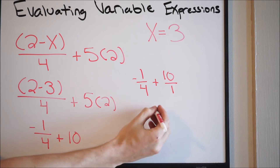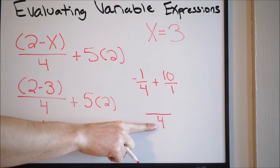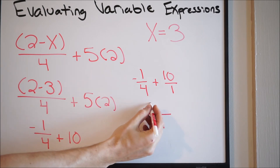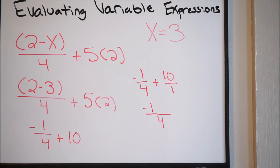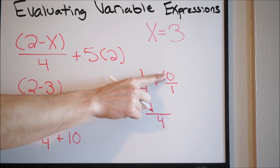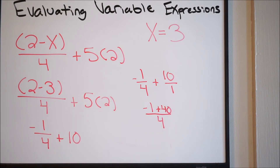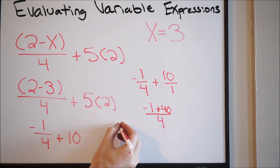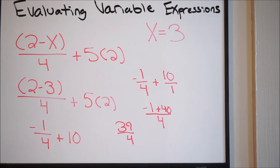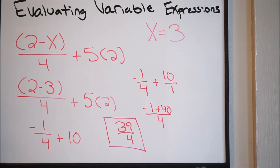So 4 times 1 is going to give you 4. Then you ask yourself, what did you multiply the first denominator by in order to get 4? You multiply by 1, so 1 times negative 1 is negative 1. And what did I multiply the second denominator by to get 4? I multiply by 4, so 4 times 10 gives you 40. Simplifying the numerator, we get 39 over 4. We can leave this as an improper fraction — this is going to be our final value of the expression.